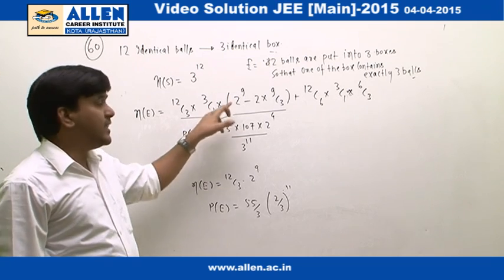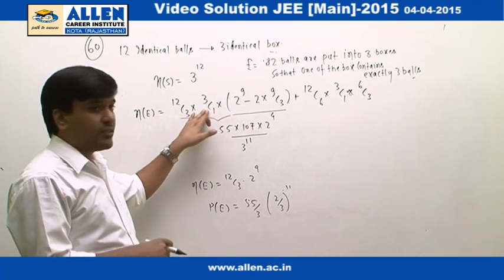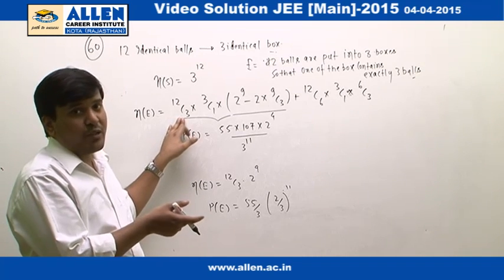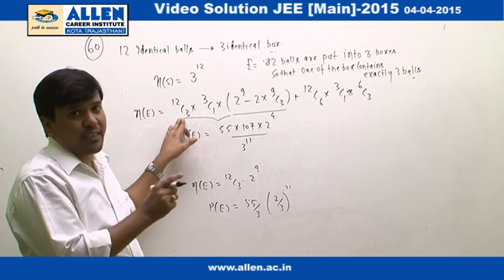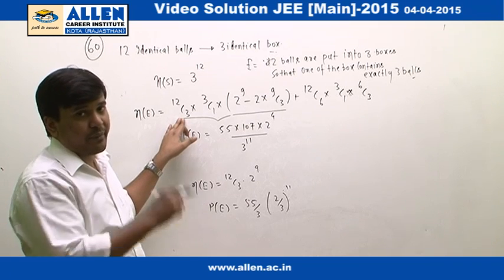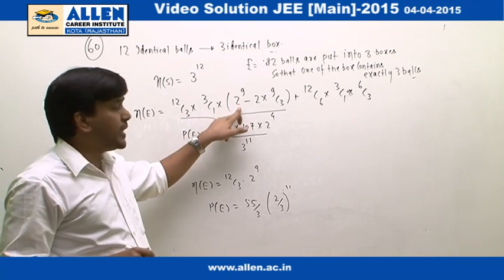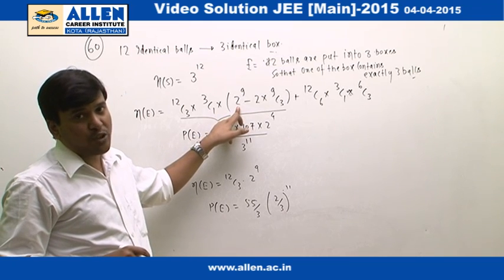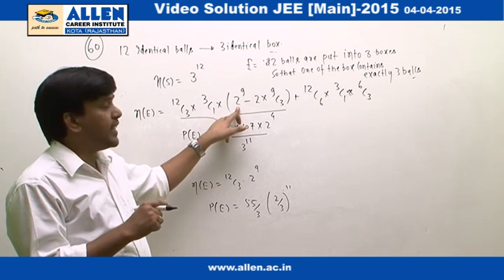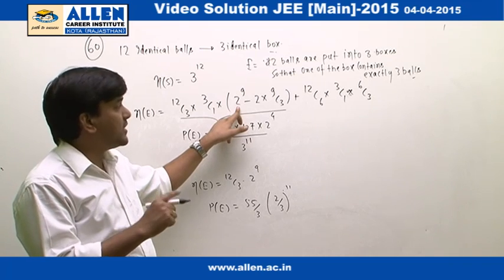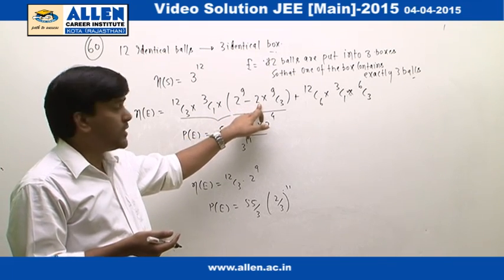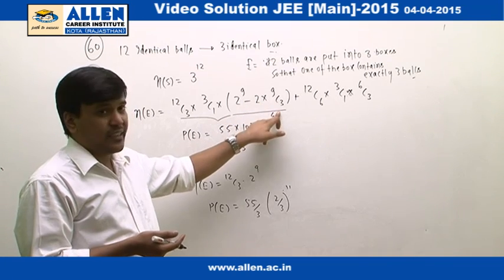Now, when we are selecting a box by 3C1 and putting these 3 balls into that box, we are left with 9 balls and we have to put those 9 balls into the remaining 2 boxes, and that will be given by 2 raised to the power 9. But in the case when we are using 2 raised to the power 9, this will give us the case of 3-6 as well as 6-3. So we are subtracting those two cases by minus 2 into 9C3.